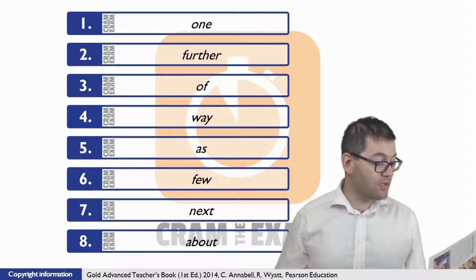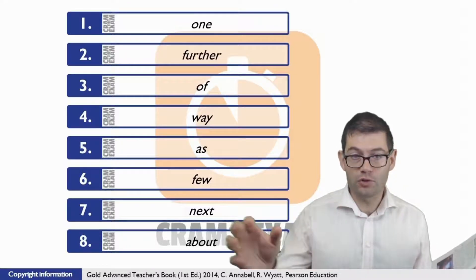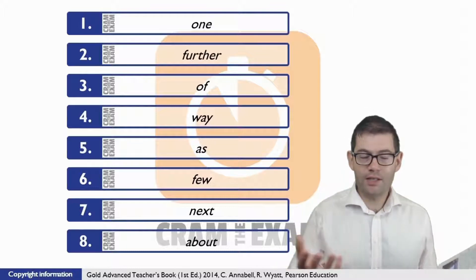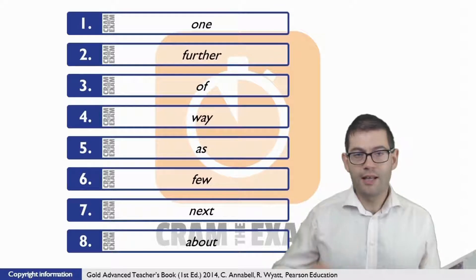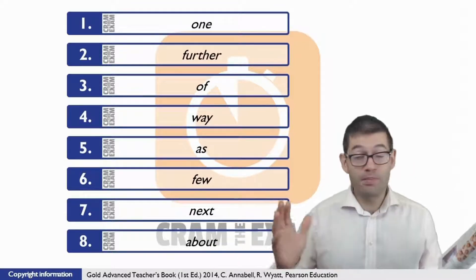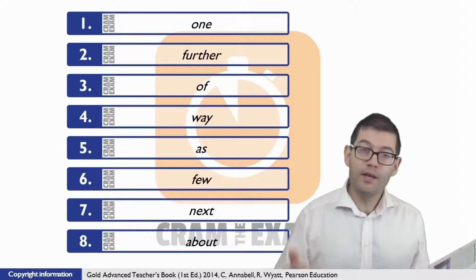For question number two, once again, have a look at the context. The context is basically saying that the time is enough for the people to decide that they don't want to see each other in the future anymore. In other words, that the relationship probably has no future.